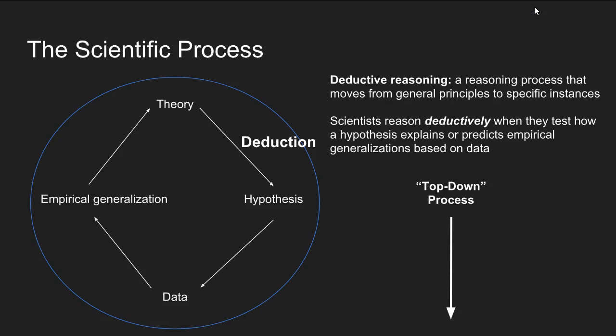There are two types of reasoning, and they refer to where you start along the scientific process. Deductive reasoning is a reasoning process that moves from general principles to specific instances — from the general to the specific. Scientists reason deductively when they test how a hypothesis explains or predicts empirical generalizations based on data. It's also referred to as a top-down process.